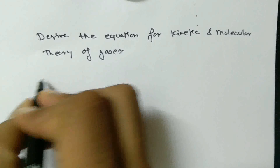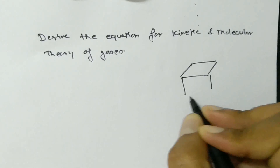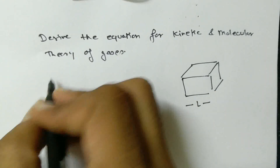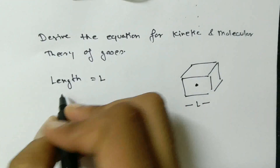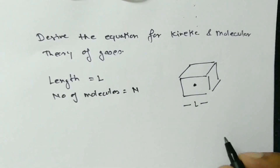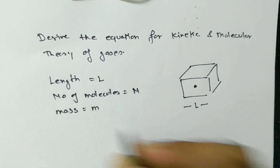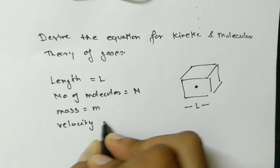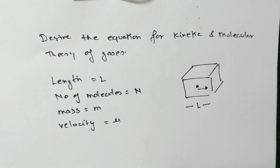Let's assume a box of length L, containing N number of molecules with a mass of M, and they are moving with a continuous velocity of nu. Let's assume this molecule is moving in the X direction only.